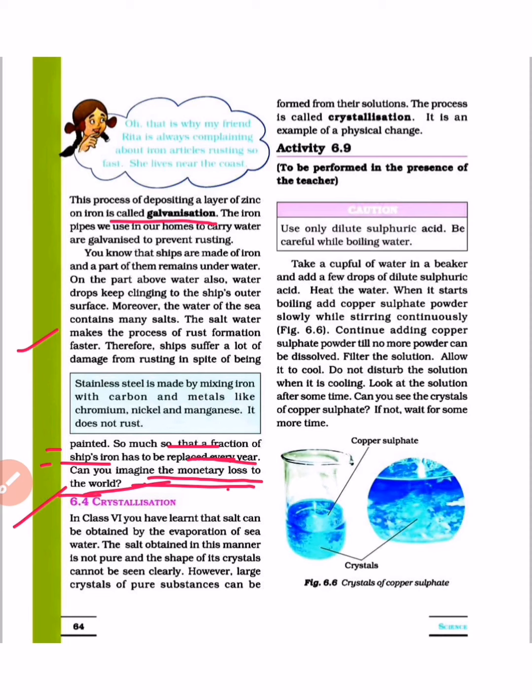The next topic is 6.4, that is crystallization. In class 6, you have learned that salt can be obtained by the evaporation of sea water. The salt obtained in this manner is not pure and the shape of its crystals cannot be seen clearly.